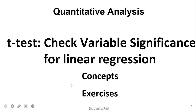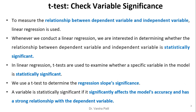Welcome to this video on t-test to check variable significance for linear regression. This video covers the basic concept of t-test for linear regression and related exercises. In linear regression, we check the relationship between the dependent variable and independent variable. T-tests are used to examine whether a specific variable in the model is statistically significant, determining regression slope significance. A variable is statistically significant if it significantly affects the model's accuracy and has a strong relationship with the dependent variable.